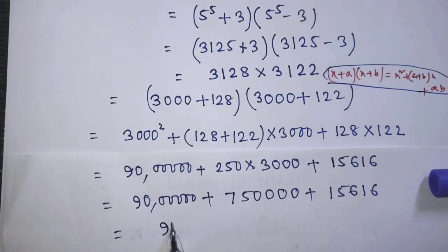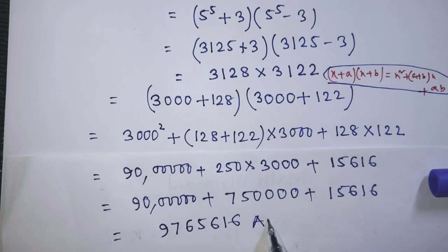If you add these three numbers, then you get 97 lakhs 65 thousand 6 hundred 16. This is our final answer.